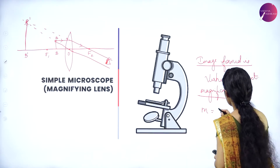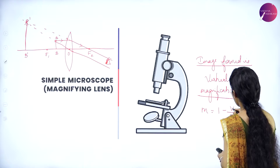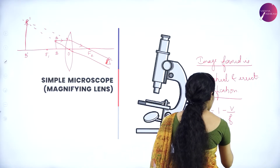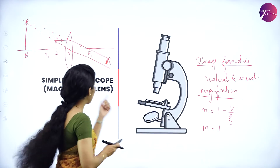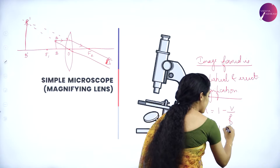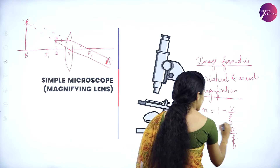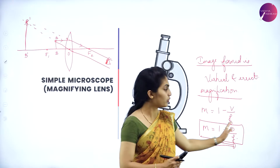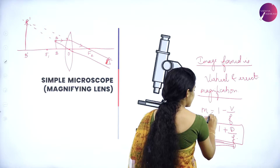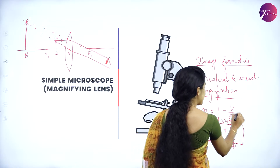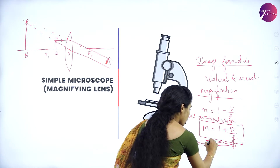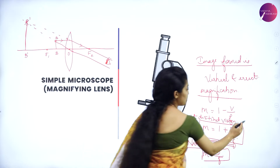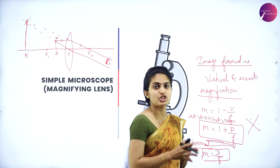The magnification is M = 1 + D/F for distinct vision. Here V is the distance of vision, represented as D. Since the image is formed on the negative side of the lens, negative of negative gives positive D/F. So M = 1 + D/F at distinct vision. For normal vision, the magnification is M = D/F. These are the magnification expressions for the simple microscope.